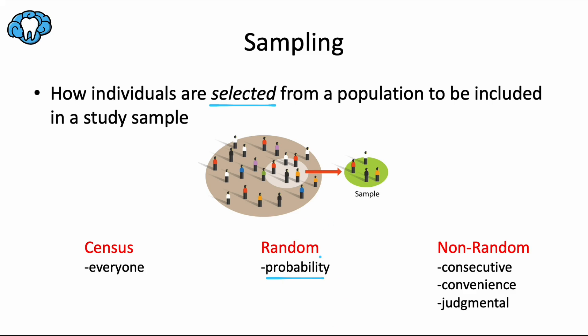But sometimes a random sample is not possible either, and so we go to the last category here, the non-random selection. And we have several options for this category. A consecutive sample is where you include all individuals after a specific time or date. For example, all patients who walk through the door of your practice on Monday. Those are the people who will be included in the study. Or you go to a continuing education course, and the first 10 people to walk through that door get this survey that you're using for your research. This would be considered the best of the non-random options.